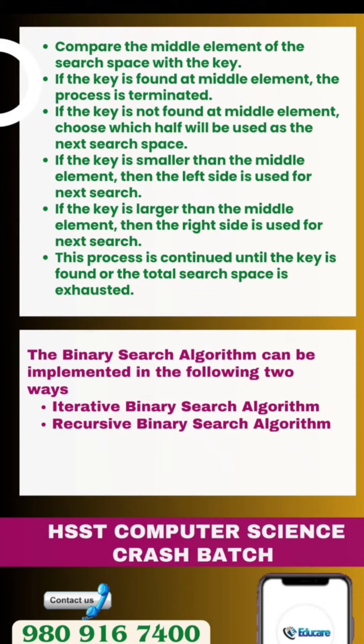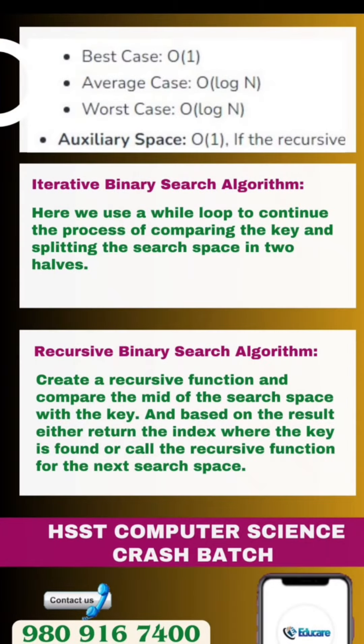There are two types of binary search algorithm: iterative binary search and recursive binary search. In iterative binary search, we use a while loop to continue the process of comparing the key and splitting the search space into two halves. In recursive binary search, we compare the middle of the search space with the key and, based on the result, either return the index if the key is found, or call the recursive function for the next search space.